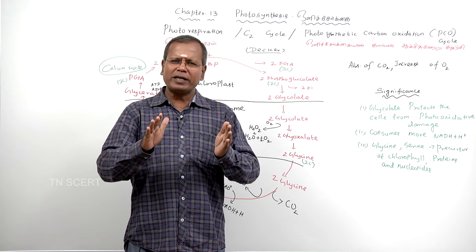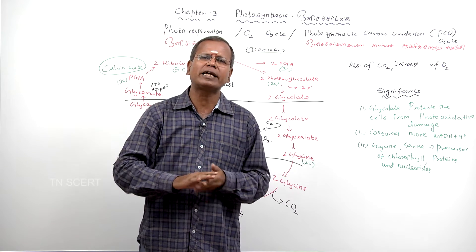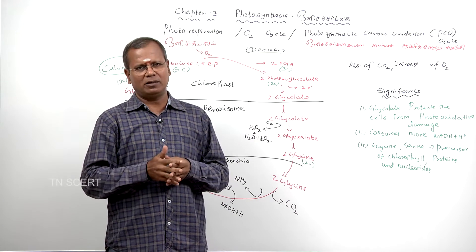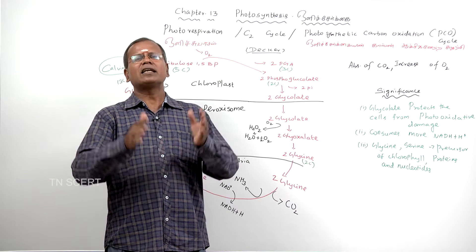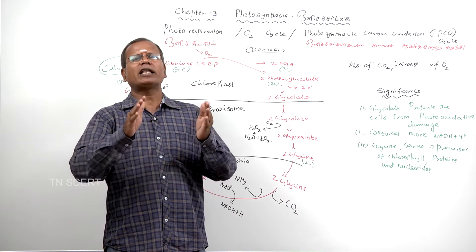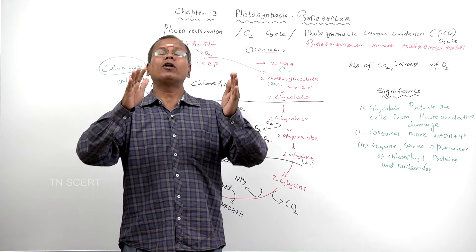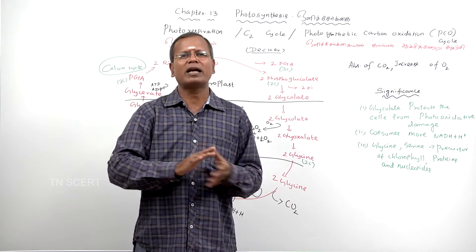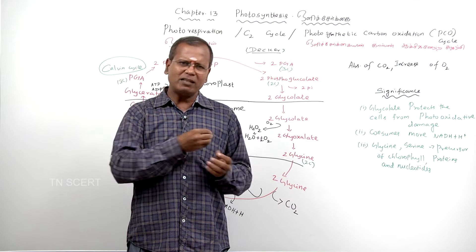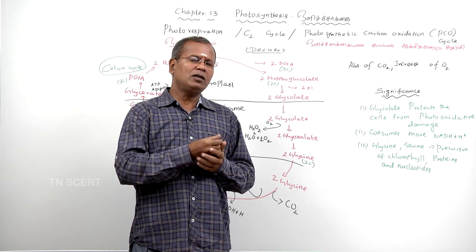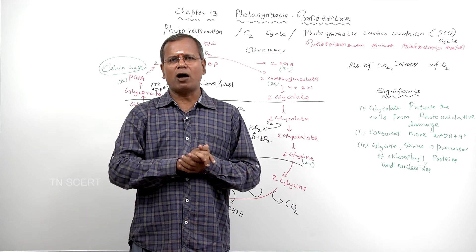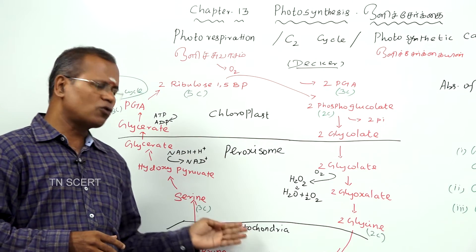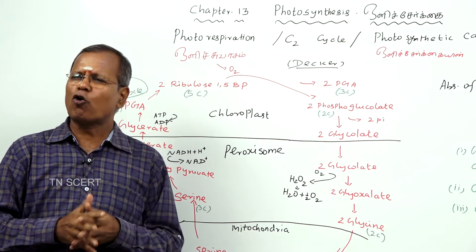This respiration takes place only in photosynthetic tissue or cells with chloroplasts. And in this respiration, three cell organelles are involved, namely the chloroplast, peroxisome, and mitochondria.